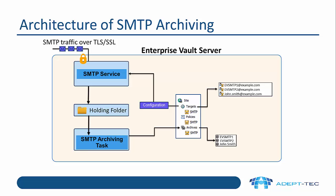The archiving task runs all the time and processes those emails according to the targets that are set up. Looking in the top right-hand corner, you can see we've got three targets. So if it sees an email sent to evsmtp1@example.com, they'll be placed into the evsmtp1 archive according to the policy that you've set. That's the standard way archiving works, but let's look at a couple of other ways we can do it.